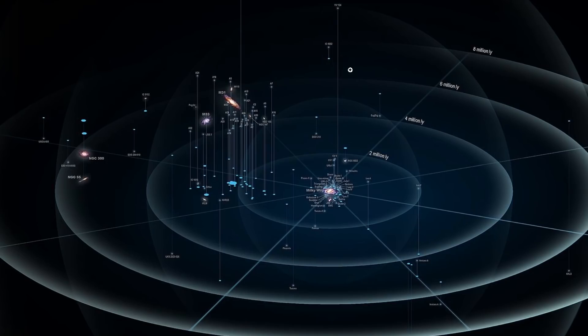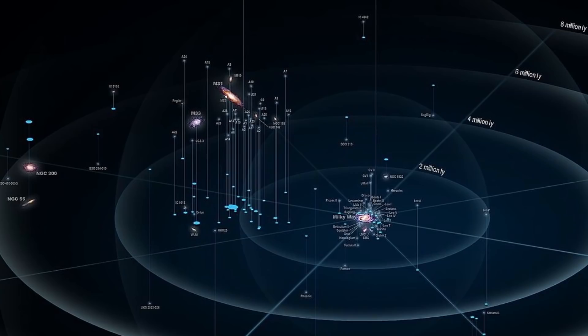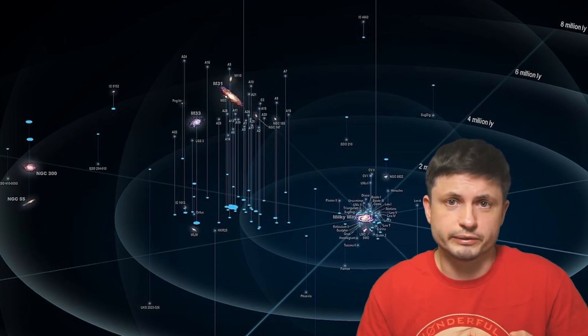Here's by the way what the Local Group sort of looks like, with the center right there being the Milky Way with a few neighbors that we have—smaller dwarf galaxies. But as you can see, generally speaking, it's actually a relatively empty neighborhood. We have the Andromeda galaxy and the Triangulum galaxy and a few dwarf galaxies here and there, but compared to a lot of other neighborhoods this is actually relatively empty.